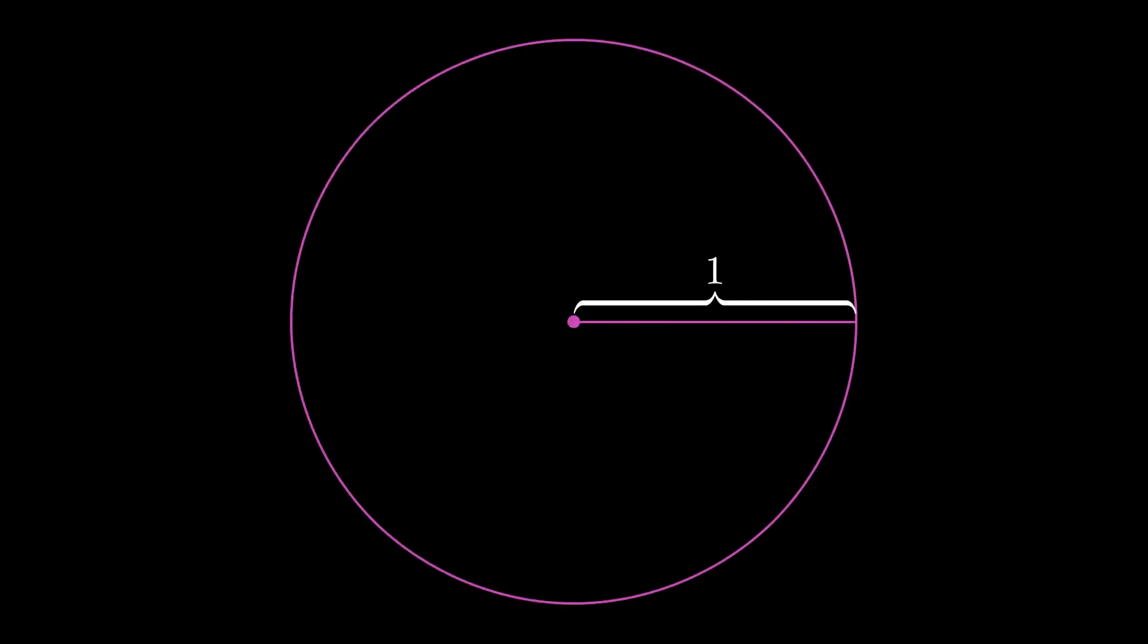Suppose you were asked to find the area of a circle whose radius is 1. How could you go about finding that proposed area?